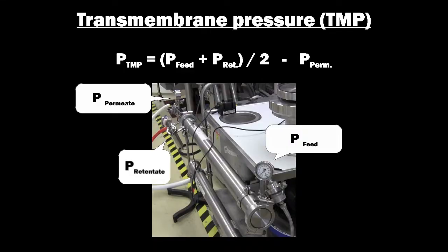The TMP can be manipulated in a couple of ways. One, adjusting the pump speed and associated feed pressure. Or two, adjusting the retentate back pressure valve to restrict retentate flow but maintain higher pressures on the feed side of the membrane.